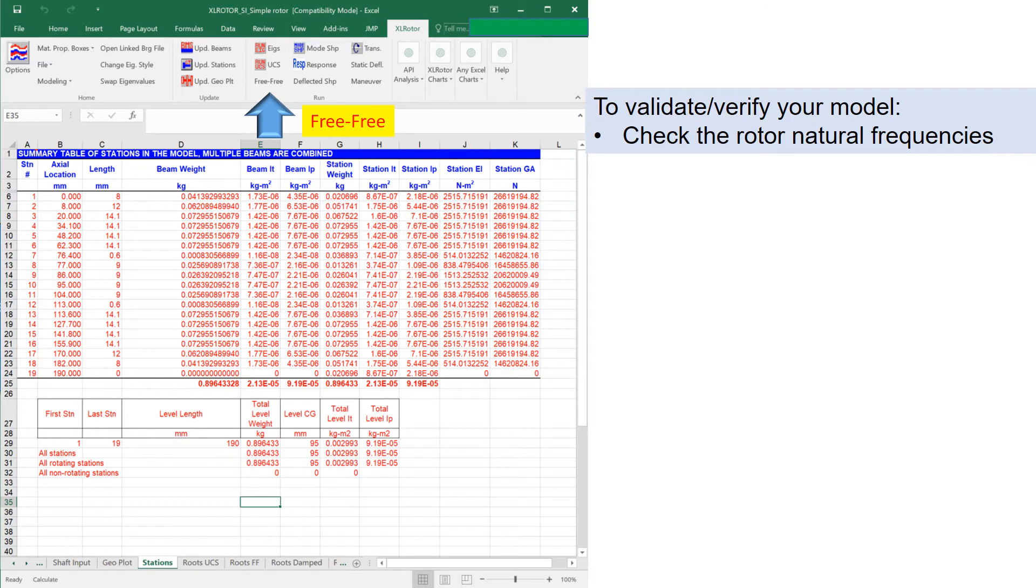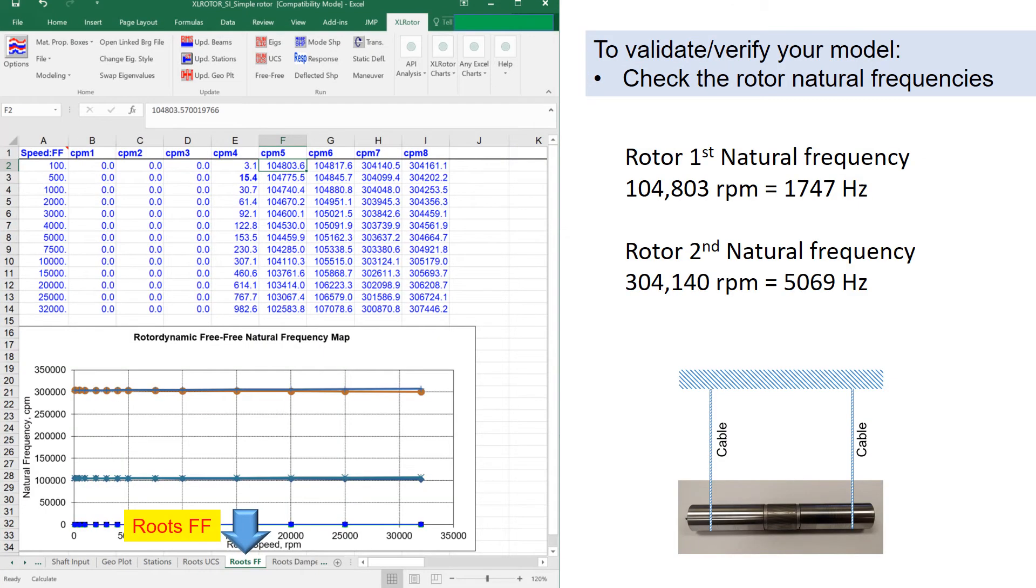To check the rotor natural frequencies, press free free calculation in the command tab. Then the software calculates the free free natural frequencies, which represents the natural frequencies of a rotor hanging freely on the cables.